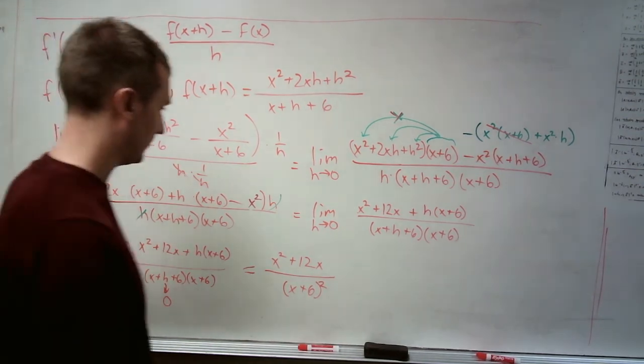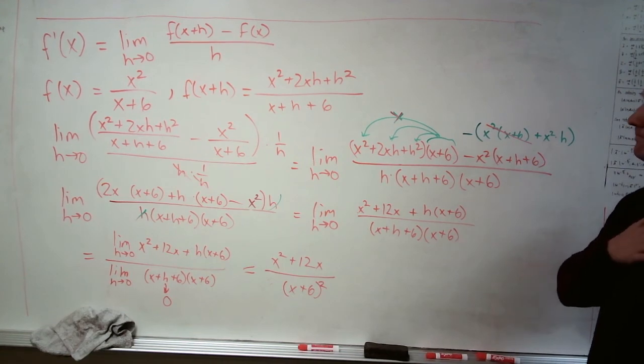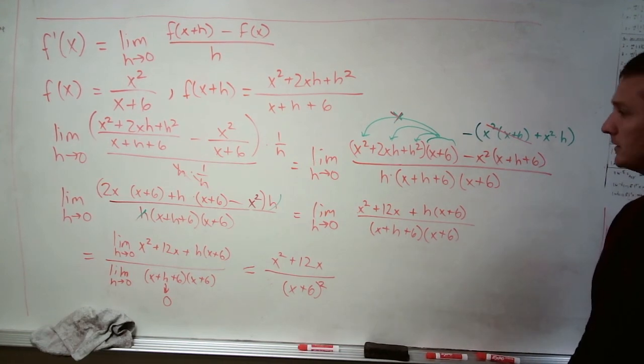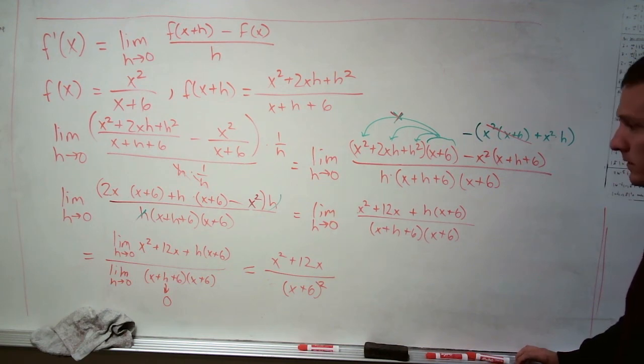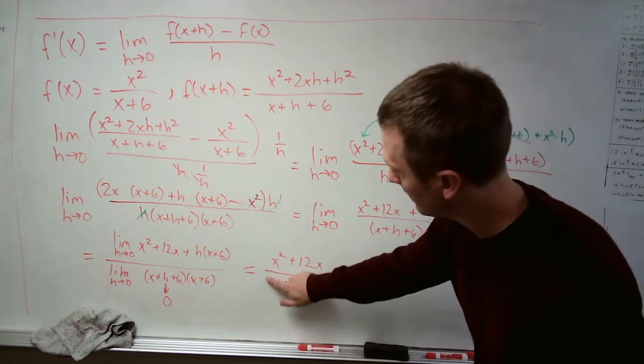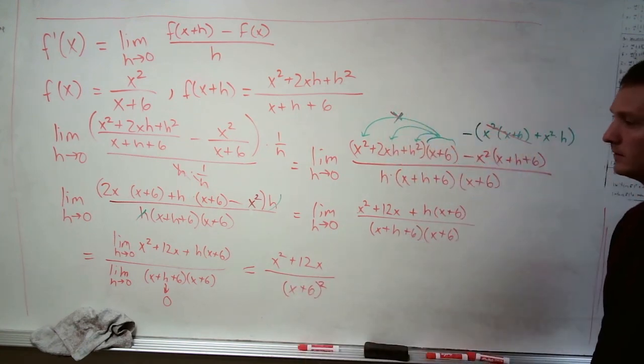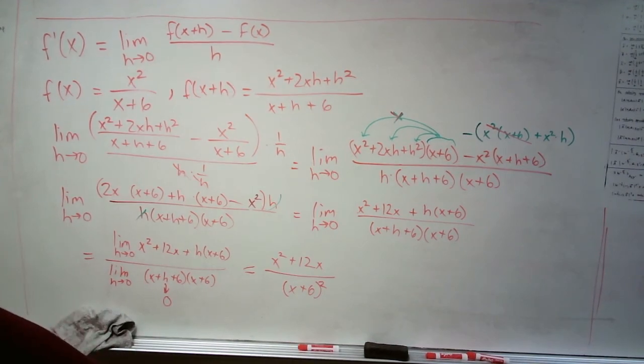There you have it. There's the last bonus derivative. I hope I didn't miss a minus sign. I think that looks good. I can double check. It should be 2x times x plus 6 minus x squared times 1. Yep. All divided by x plus 6 squared. Yes. Okay. This is right. So that's it. I hope these movies were helpful for you. I'll see you in class.